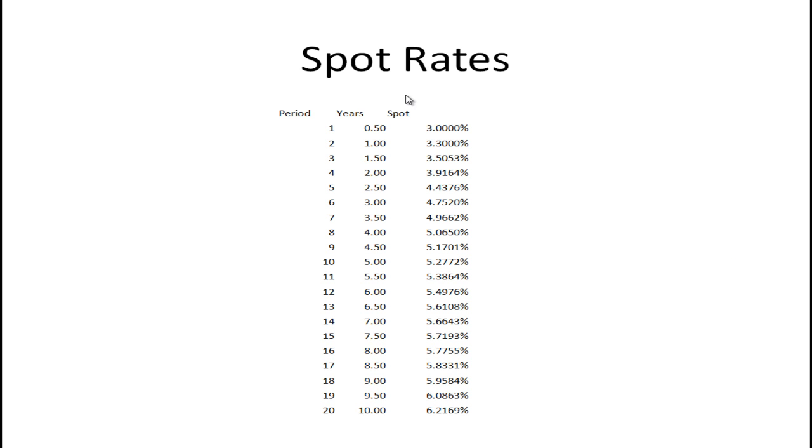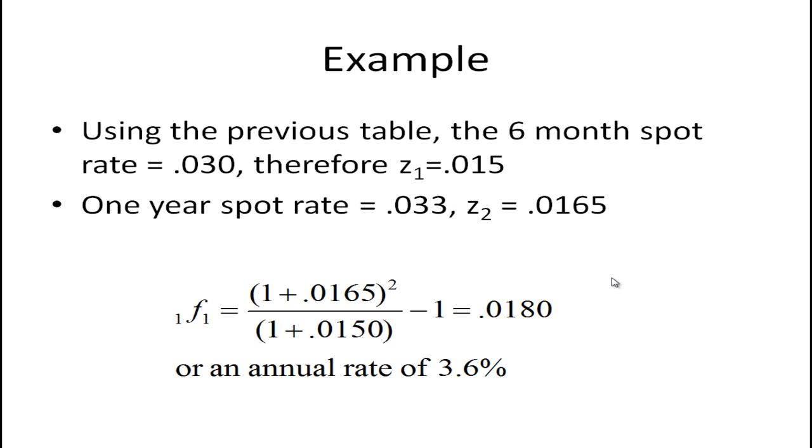So here I have some spot rates. And again if you haven't seen the previous video I've done on computing theoretical spot rates you may want to watch that to understand where these came from. Each one of these rates is the rate for discounting each cash flow this number of periods. So for two periods or two six month periods you would use this rate. This is an annual rate so you'd have to divide by two for a six month rate.